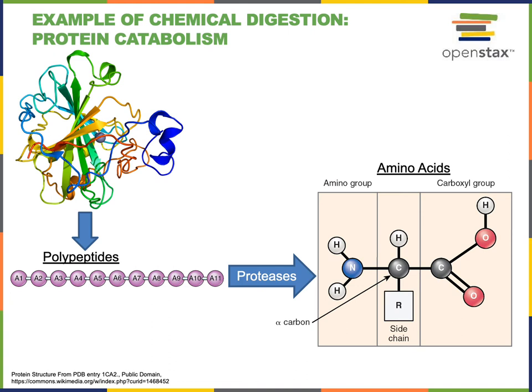Enzymes that mix in with the contents of the alimentary canal function to catalyze the chemical reactions of chemical digestion. One example is the chemical digestion of protein. Taking a long chain of amino acids — a polypeptide — and breaking it down to individual amino acids, the broad category of enzymes that catalyze those reactions are known as proteases. There are many specific proteases because each peptide bond has a specific shape; some proteases remove amino acids from the end of a polypeptide, while others catalyze the hydrolysis of a peptide bond in the middle of a polypeptide.